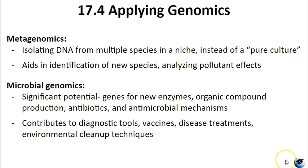Metagenomics offers an alternative approach by studying the collective genomes of multiple species in an environmental niche. It helps to identify new species more rapidly and analyzes things like pollutant effects on an ecosystem. Microbial genomics has vast untapped potential, providing genes for new enzymes, producing organic compounds, enabling the development of products like antibiotics and antimicrobial mechanisms, and contributing to diagnostic tools, vaccines, disease treatments, and environmental cleanup techniques. Mitochondrial DNA is also used for studying evolutionary relationships and tracing genealogy. Forensic science uses genomic analysis to solve crimes and provide evidence in court cases.